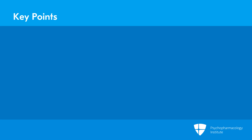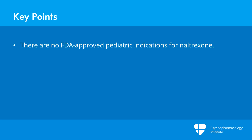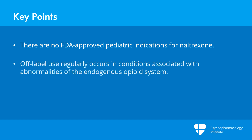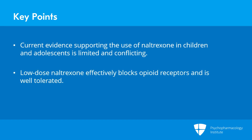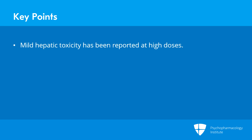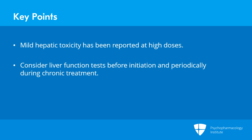Key take-home points: there are currently no FDA-approved pediatric indications for naltrexone. However, off-label use regularly occurs in conditions associated with abnormalities of the endogenous opioid system, such as self-injurious behaviors, eating disorders, autism spectrum disorders, and alcohol use disorders. Current evidence supporting the use of naltrexone in children and adolescents is limited and conflicting, but low-dose naltrexone appears to effectively block opioid receptors and is well tolerated with few side effects. Mild hepatic toxicity has been reported at high doses, and liver function tests should be considered before initiation of treatment and periodically during chronic treatment.